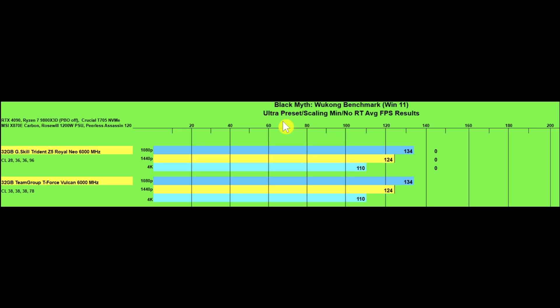The next gaming benchmark was Black Myth: Wukong using the benchmark tool at Ultra Preset — which they call Very High — with scaling at minimum since you can't turn it off, using TSR and no RT. The results were exactly the same across the board for both kits at 1080p, 1440p, and 4K.